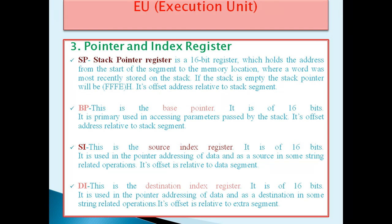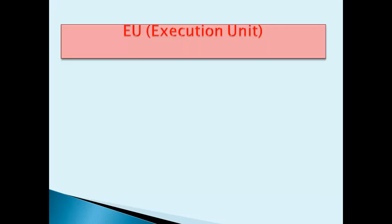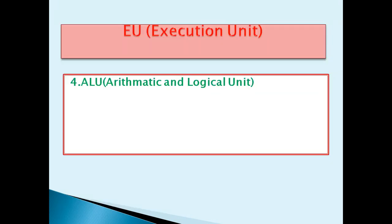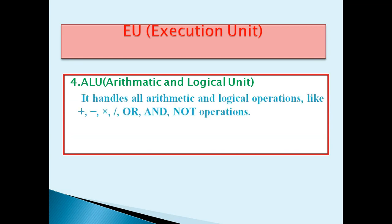The first Index Register is the Source Index register (SI), a 16-bit register used in pointer addressing of data and as a source in some string-related operations. Its offset is relative to the data segment. The second Index Register is the Destination Index (DI), also 16 bits, used in pointer addressing of data and as a destination in some string-related operations. Its offset is relative to the extra segment.